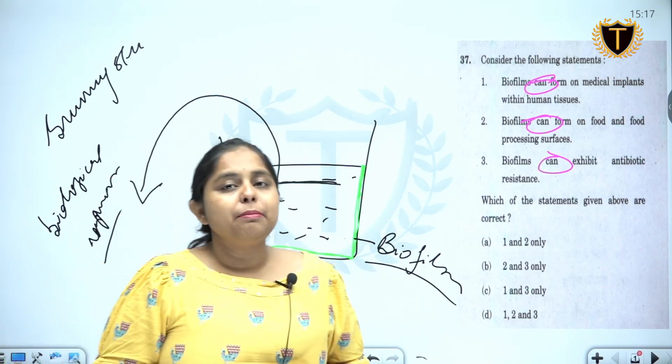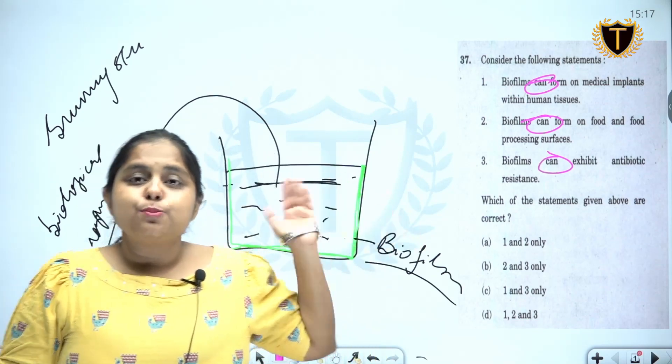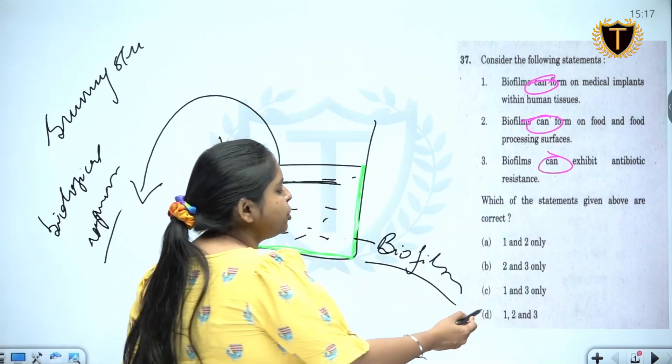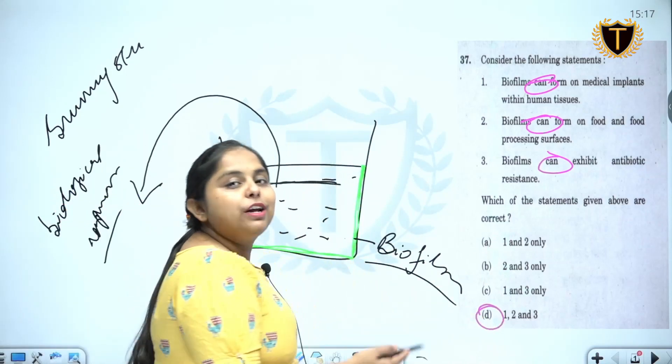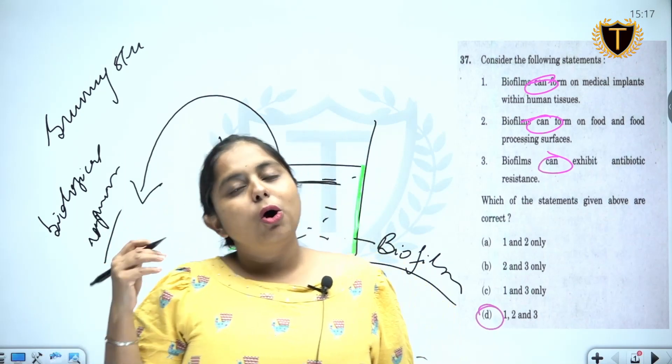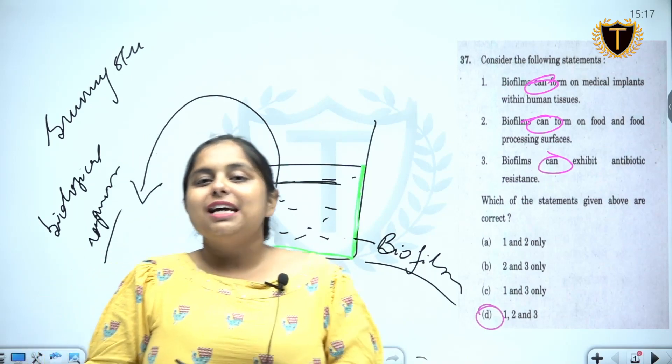And they can exhibit antibiotic resistance - yes, we spoke about penicillin. So the answer here should be D. But we are not worried about the answer, we are worried about understanding the concept, and I hope you all have understood the concept. Thanks for watching.